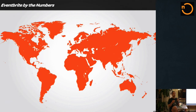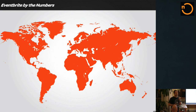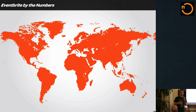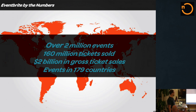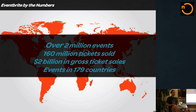A little bit about Eventbrite — we're a marketplace of live experiences. We try to connect people with events, let you find great events, buy tickets, and then let organizers engage with you and create awesome experiences. We've sold over 160 million tickets on our platform, and we're working really hard to make the Eventbrite experience really mobile.